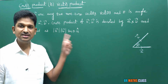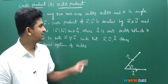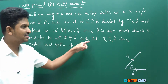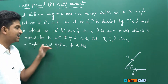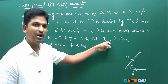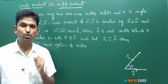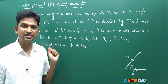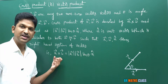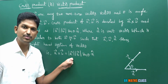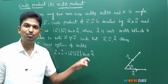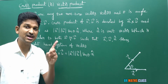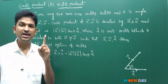Cross product is defined as: magnitude of a̅ into magnitude of b̅ into sine theta into n̂. Here, what is n̂? n̂ is a unit vector which is perpendicular to both the vectors a̅ and b̅, such that a̅, b̅, n̂ forms a right-hand system of vectors. This is very very important — a̅, b̅, n̂ forms a right-hand system of vectors.